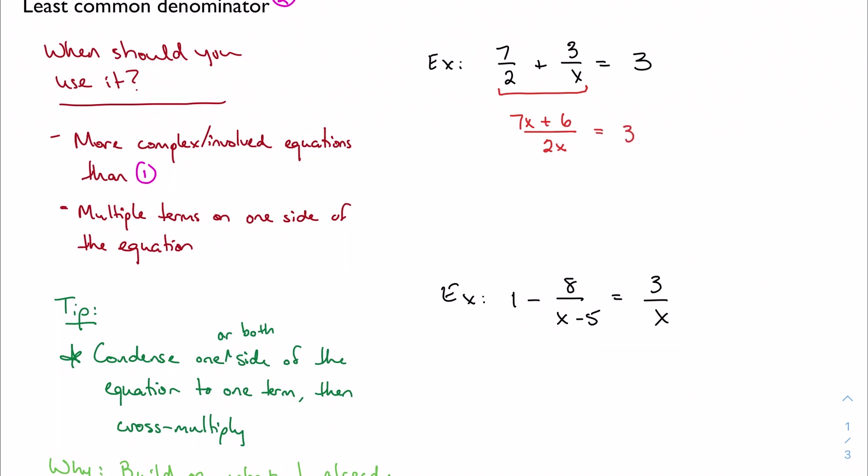And now I can just cross-multiply. And we're going to imagine that there is kind of a division by 1 going on over here on the right. So I'm going to cross-multiply. 7x plus 6 equals 2x times 3. So I get 7x plus 6 equals 6x. I get 6 equals negative x. And I get x equals negative 6. So it's just that easy. That's all I need to do. And of course, I can go back and check my answer if I wanted to.